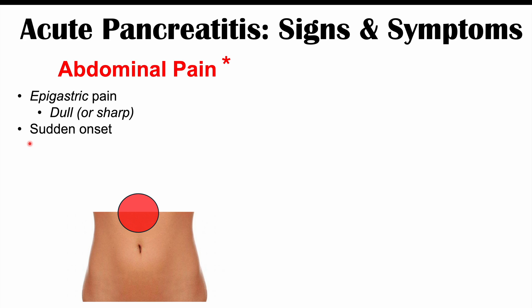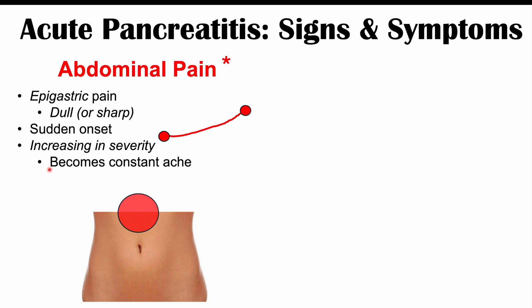The pain has a sudden onset and increases in severity, eventually becoming a constant severe ache in the epigastric area. In around 50% of patients, the pain radiates to the back. The abdomen is going to be very tender with a lot of guarding, meaning patients will not want you to touch their abdomen.